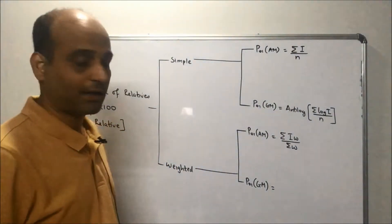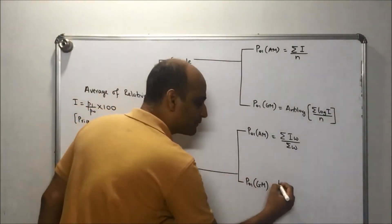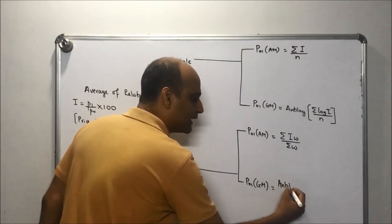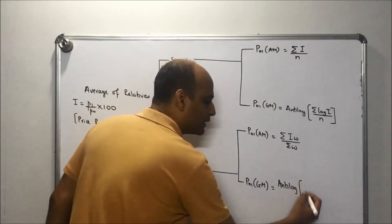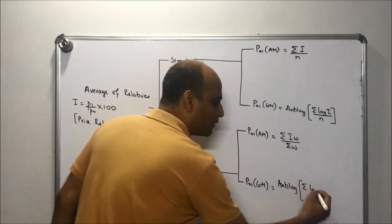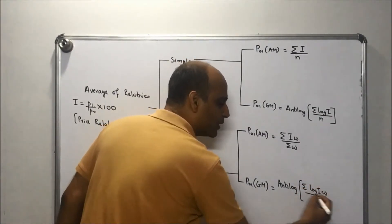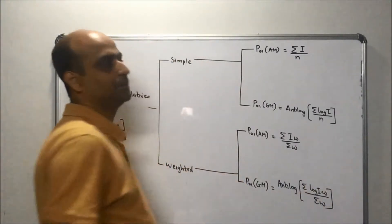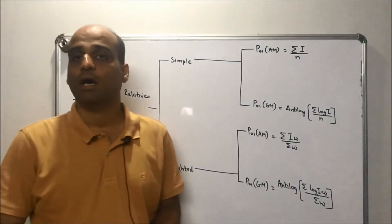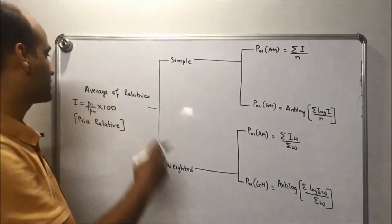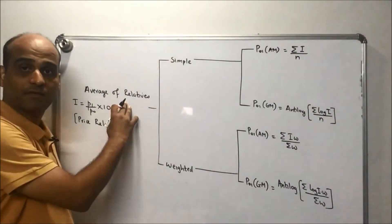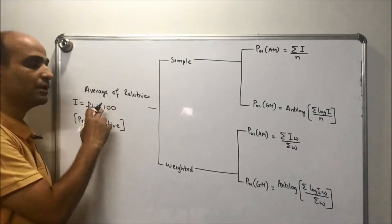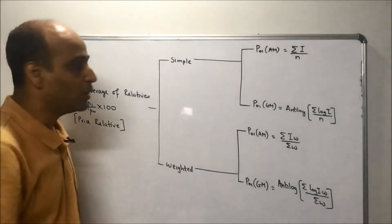In geometric mean, the formula becomes antilog summation of log I times w upon summation w. So these are the formulae under which method? Yes, the average of relatives method, relatives as in the price relatives.